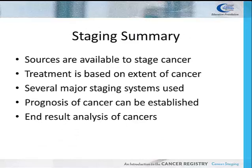In summary, there are many sources within the medical record that must be used to determine the stage of a patient's cancer. Patient treatment is based on the stage or extent of the cancer. We learned the major staging systems used in the cancer registry are the SEER summary stage and AJCC cancer staging. The prognosis for individual patients can be estimated using the stage of cancer. The stage of cancer is also used when analyzing the end result, survival, and outcomes of cancer. To learn how to assign the SEER summary and AJCC stage to cases, please go to the staging activities that are available.